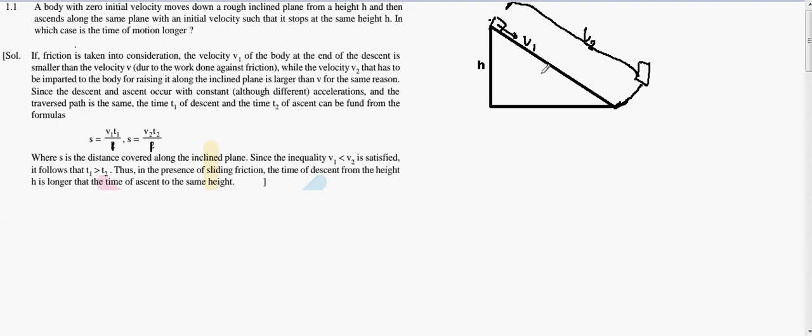Therefore, the velocity will be smaller in the ascent case. In the descent case, the velocity will be larger.